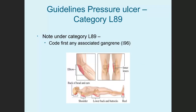There are notes and guidelines for pressure ulcer diagnosis codes. First, under category L89 is the note: code first any associated gangrene, I96. Gangrene, of course, is death of tissue. So code first I96, and then code the pressure ulcer.